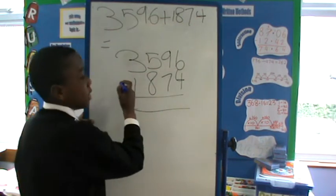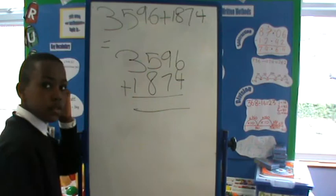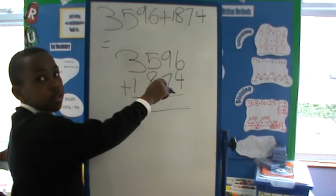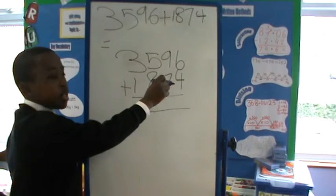And don't forget to put the add sign at the left. Okay, first you have to start on the right side of the column and add the units.